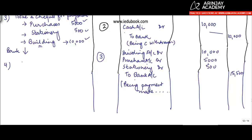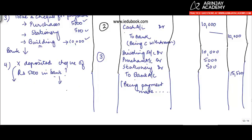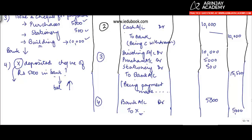The last situation is when someone deposits money directly into the bank. For example, X deposited a check of rupees five thousand in the bank. X can deposit this only if he owes me money. Once he deposits, the bank balance goes up, so debit bank — bank is an asset, increase in asset is debited. And there is a liability or receivable towards X, so X's account is credited. These are basically four kinds of payments that can be made through a bank account.